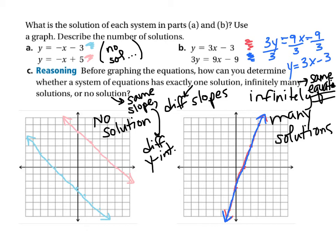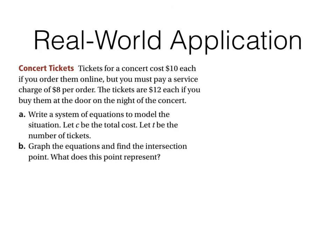Now I think I've got one more and it's an application problem. So what the heck is the point? It's actually a super useful skill, being able to solve systems of equations. Tickets for a concert cost $10 each if you order them online, but you have to pay a service charge of $8 per order. The tickets are $12 each if you buy them the night of the concert at the door. Write a system of equations. Let C be the total cost and T be the total number of tickets. No, I will not. I will let Y be the total cost and X be the total number of tickets. Because this C and T nonsense, if you want me to graph it, doesn't make any sense. So the first scenario, the total cost equals $10 per ticket plus $8. The second scenario, the total cost of the tickets would be $12 per ticket. And there's our two equations. And we're going to graph the two equations and find the intersection point. And then we'll talk about what that actually represents.